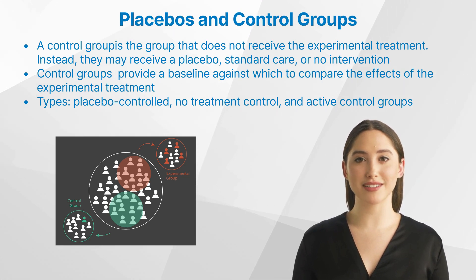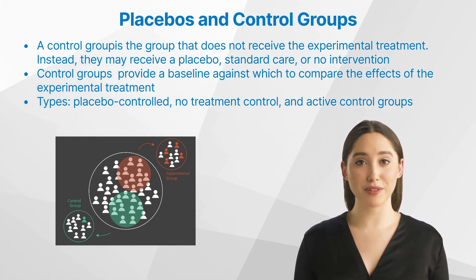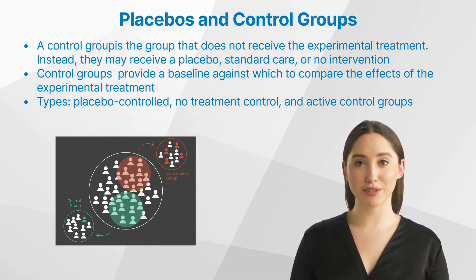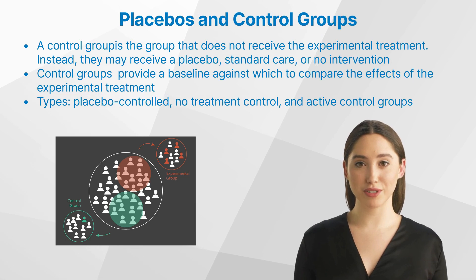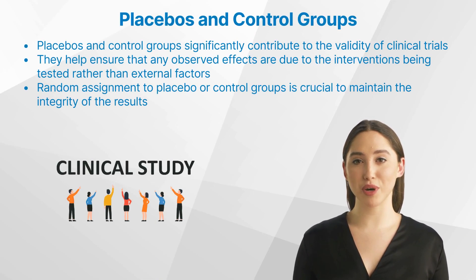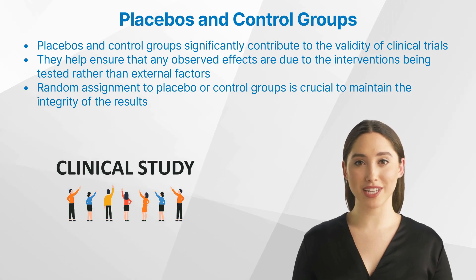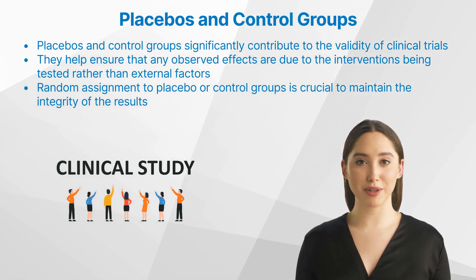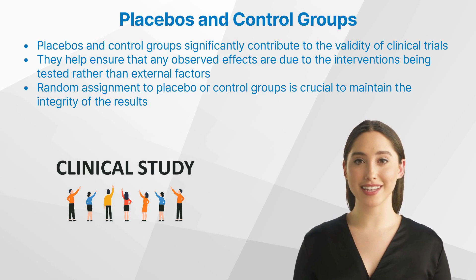For instance, in a trial studying a new cancer drug, the control group might receive the current standard chemotherapy while the experimental group gets the new drug. Any difference in outcomes between these two groups can then be attributed to the new drug.